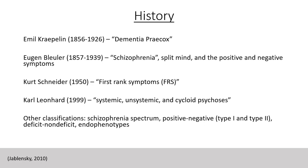Eugene Bleuler was the first to define the term schizophrenia, a term which means split mind. Schizophrenia was then seen as a splitting of the cognitive, emotional, and behavioral aspects — a fragmentation of the self — which resulted in altered perception, inappropriate behavior and feelings, withdrawal from reality and personal relationships into fantasy and delusion, and a sense of mental fragmentation. Bleuler was also the first to identify categories of symptoms we commonly use today: positive symptoms, such as hallucinations and delusions, and negative symptoms, such as amotivation, anergia, and apathy.